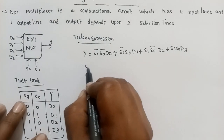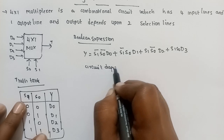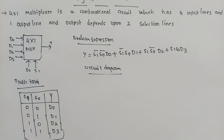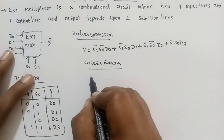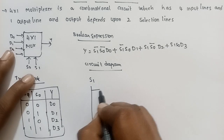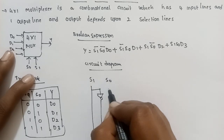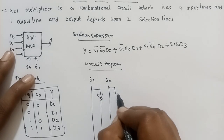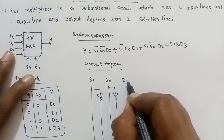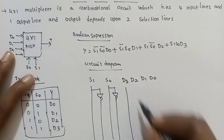Once we have the Boolean expression, we can draw the circuit diagram. This is the fifth step — we design the 4x1 multiplexer circuit. The inputs are S1, S1 inverter line, S0, S0 inverter line, and data inputs D0, D1, D2, D3.